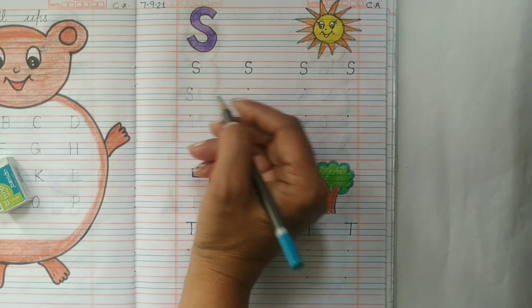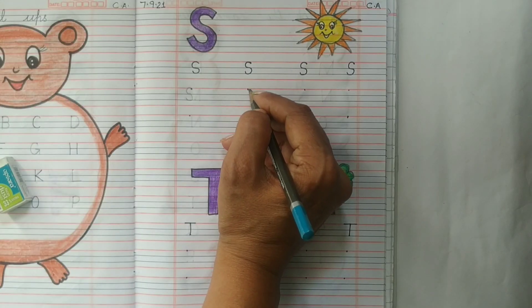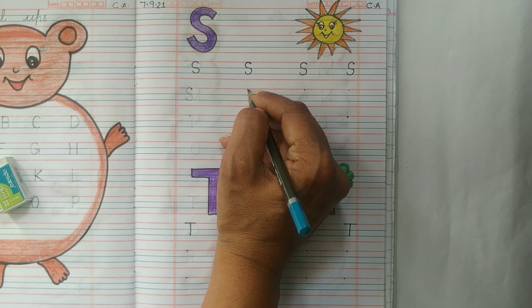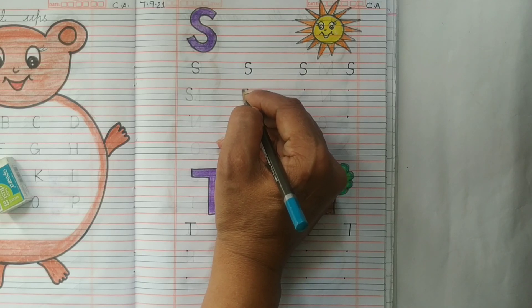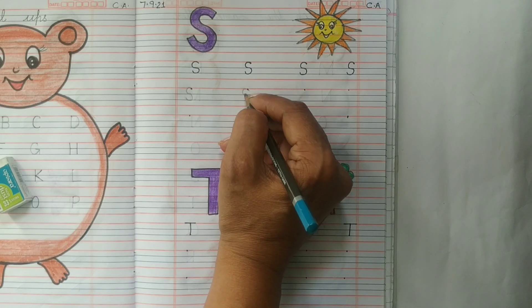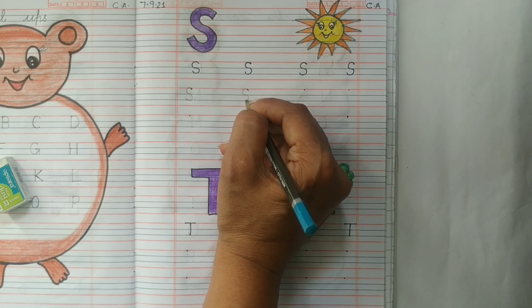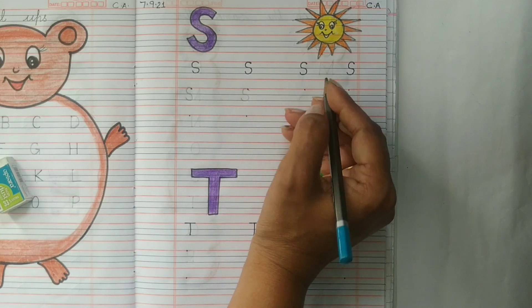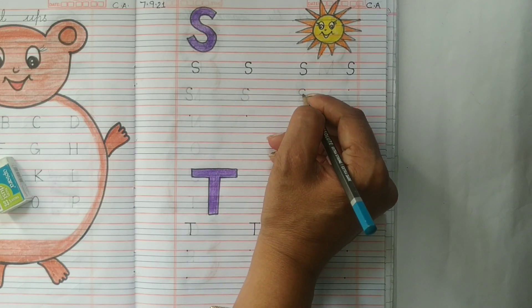This is letter S. Hamei kya karna hai bachcha? Hamei top se start karna hai aur sab se pahle kya karna hai? Hamei swing karna hai left side ki taraf aur ek curve banana hai. Then swing to the right. Hamei right side ki taraf ghumana hai and create a backward curve at the bottom. This is letter S.